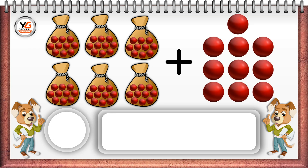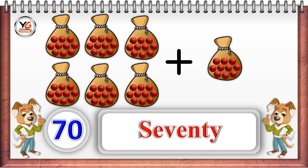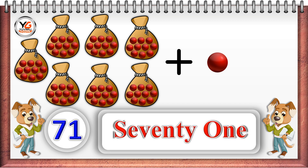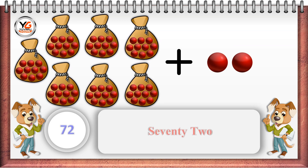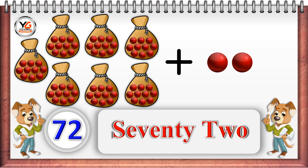Ten units means one 10: 7 tenths: 70. Seven tenths and one unit: 71. Seven tenths and two units: 72. Seven tenths and three units: 73.